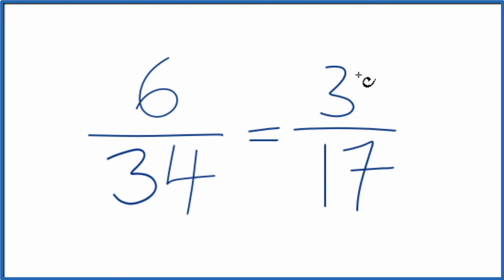And I can't reduce 3/17 any further. So this is the simplified fraction for 6 over 34. These are equivalent fractions. If you divide 6 by 34 or 3 by 17, you'll get the same decimal answer. It's just that we've simplified 6/34 down to 3/17.